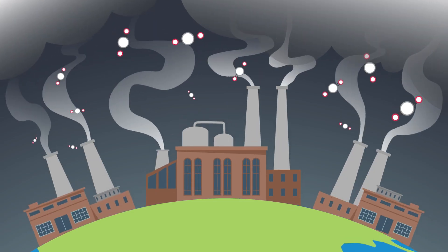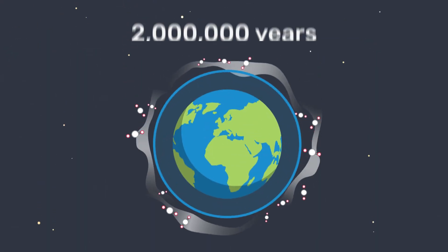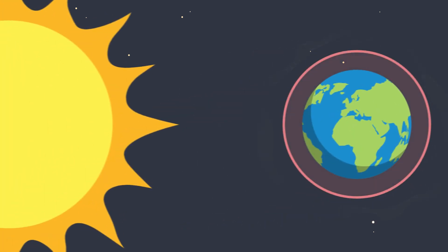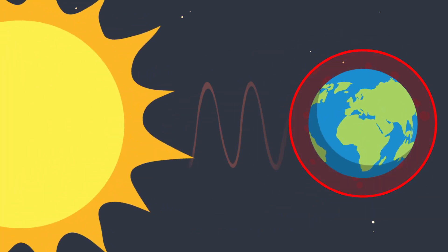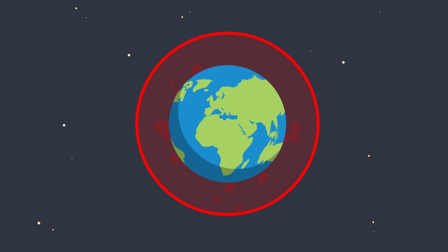There is more carbon in our atmosphere today than any other time in the last two million years. This increased carbon is trapping solar radiation, causing our temperatures to increase.